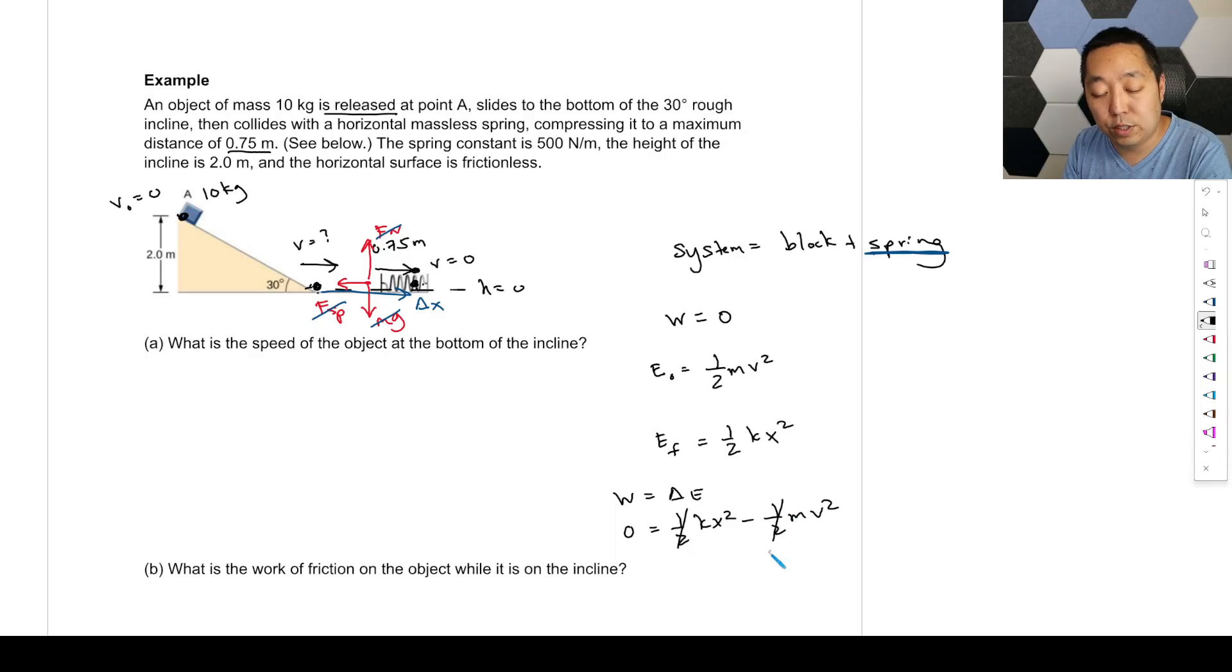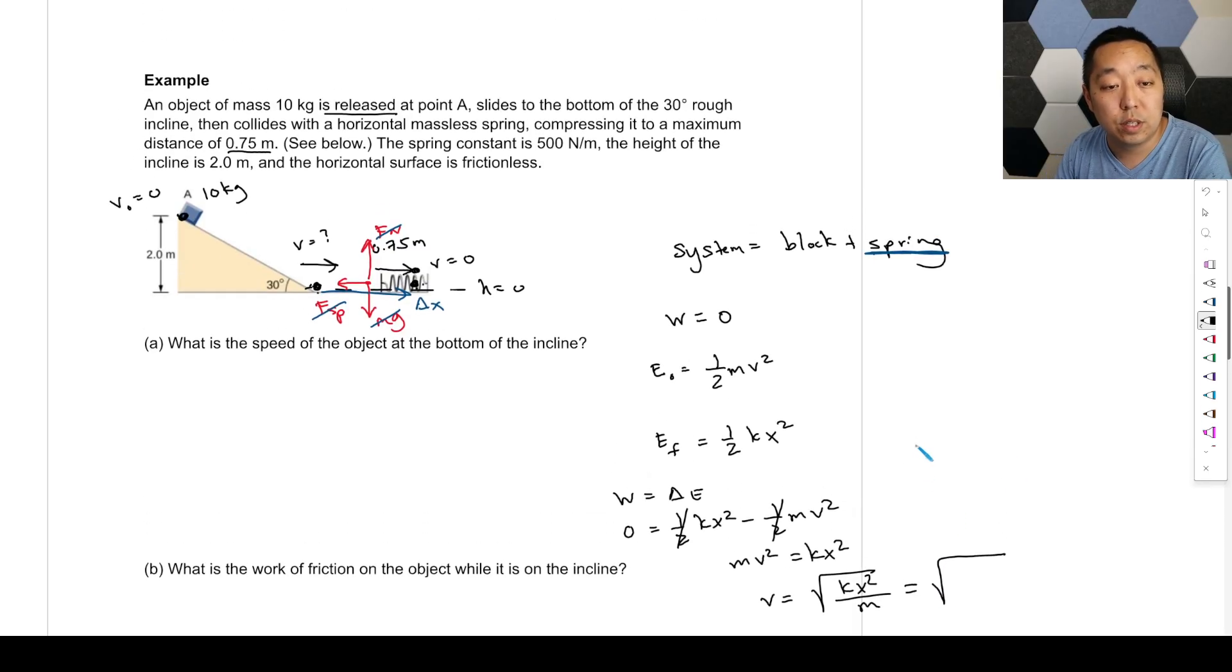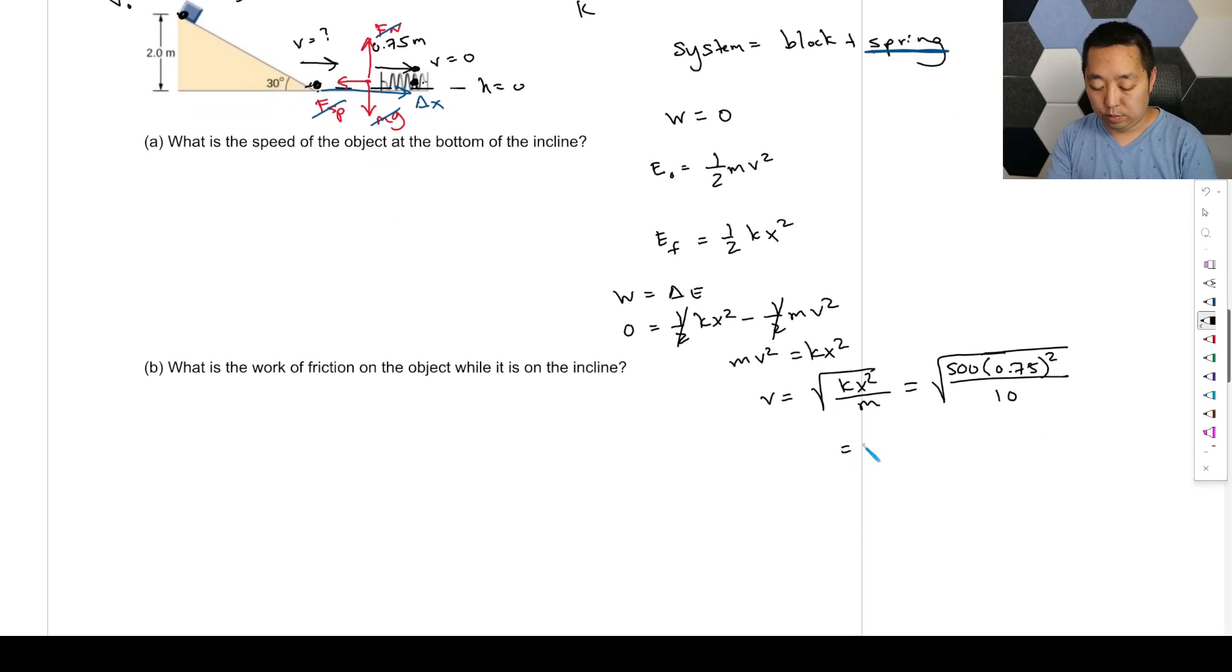The one-halves cancel. If you divide them out, we're just going to move mv squared equals kx squared. And then we're interested in the v. The v is going to be the square root of kx squared over m. So let's plug in some numbers because we know all of these numbers. The spring constant here is k, it's 500. It's compressed 0.75 meters. That's how much we've compressed the spring. And then divided by the mass, which is 10 kilograms here. So then we'll figure out the speed by doing square root of 500 times 0.75 squared divided by 10. That gives me 5.3 meters per second.